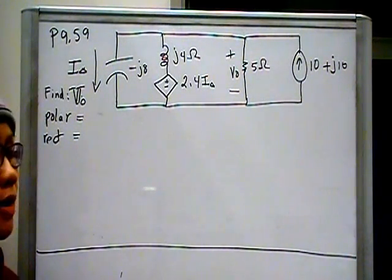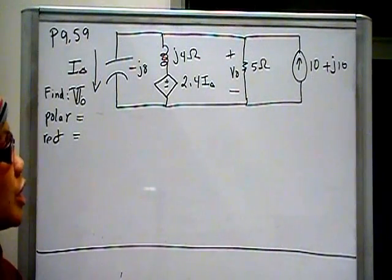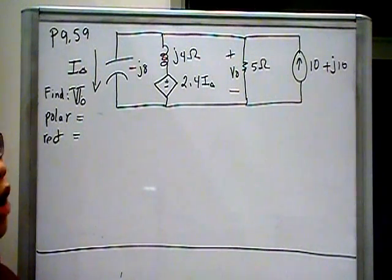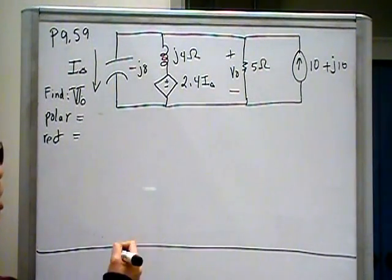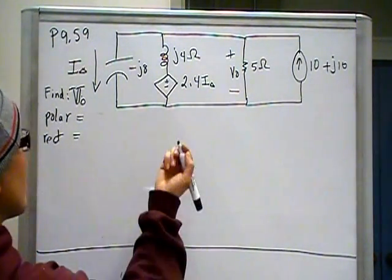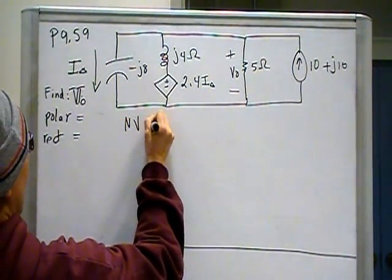So everything that we're doing is the sum of all the currents in and out of that V out node have to sum up to zero. Conservation of current law. So node voltage at V out.